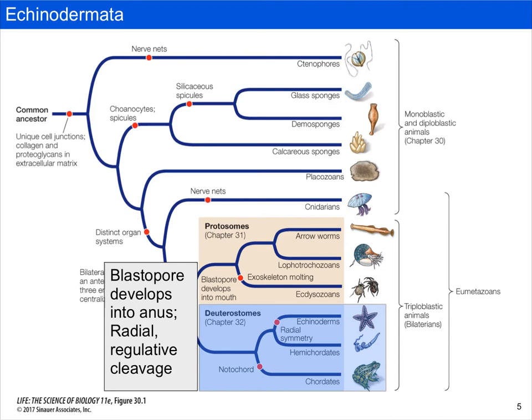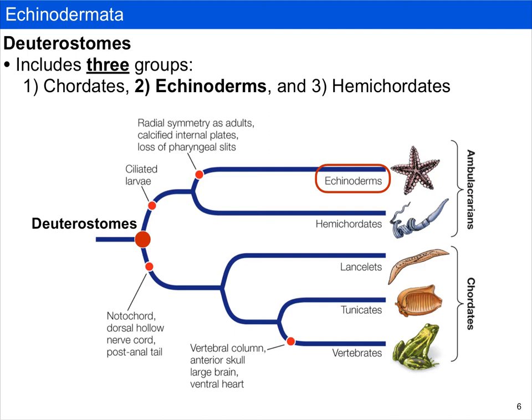The deuterostomes include three general groups: the chordates, which we're going to talk about next; the echinoderms, which is the focus of this video; and the hemichordates. We don't really talk about the hemichordates much — they're an obscure group that are sister to the echinoderms.